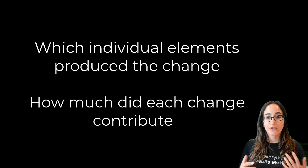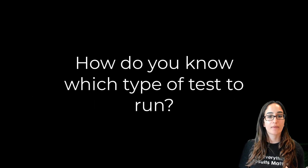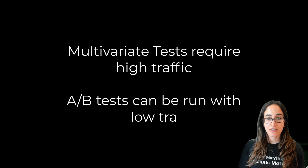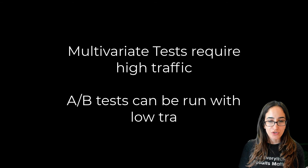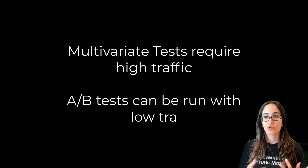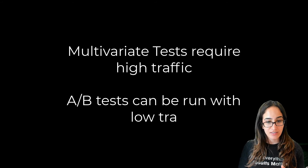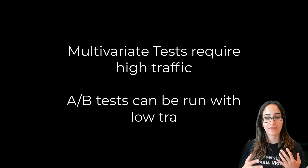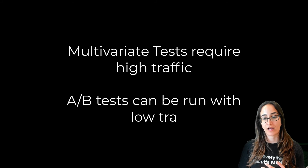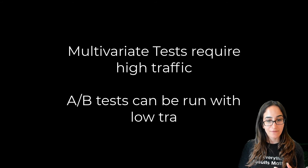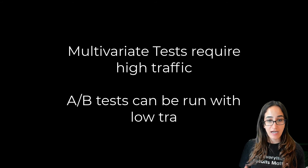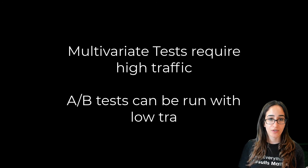So how do you know which type of test to run? The biggest problem with multivariate testing is that you need a really high traffic platform to have enough users in each group to get significant results in a reasonable amount of time. Because the number of groups grows exponentially with the number of tested variations, you should make sure you have enough traffic to make a multivariate test worthwhile. For a lower traffic platform, it's best to run an A-B test, and if you have a very high traffic platform and can run the test for a really long period of time, then you can run a multivariate test.